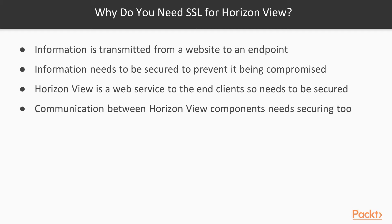SSL is used to establish the secured link between the client device and the virtual desktop machine, although with view no actual data is transmitted. The pixels from your virtual desktop machine are transmitted, and if a third party intercepts the transmissions they could potentially see your screen by redrawing these pixels. SSL is also used for communication between the Horizon View components such as the connection servers and replica servers. Having an SSL Certificate installed is a requirement for Horizon View.